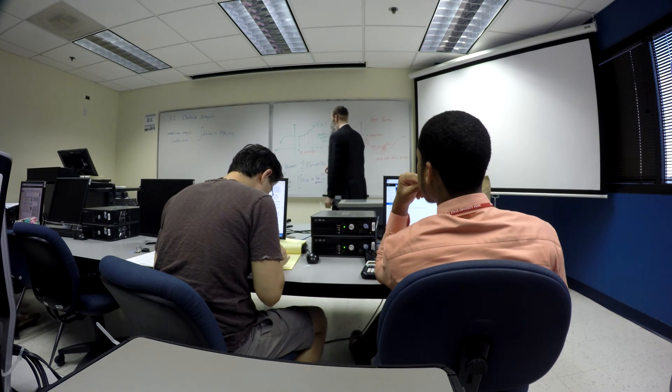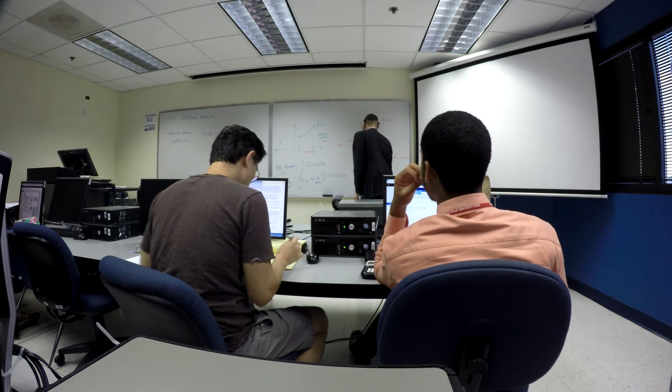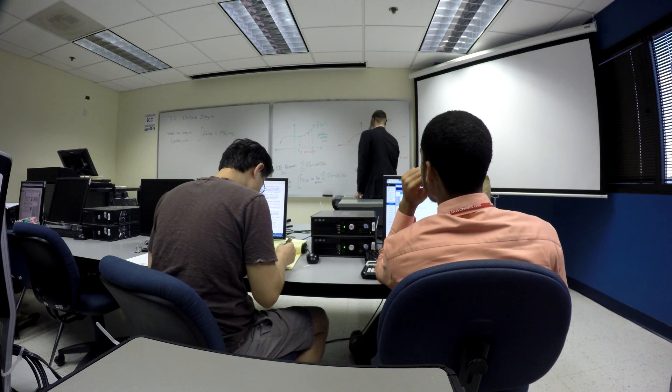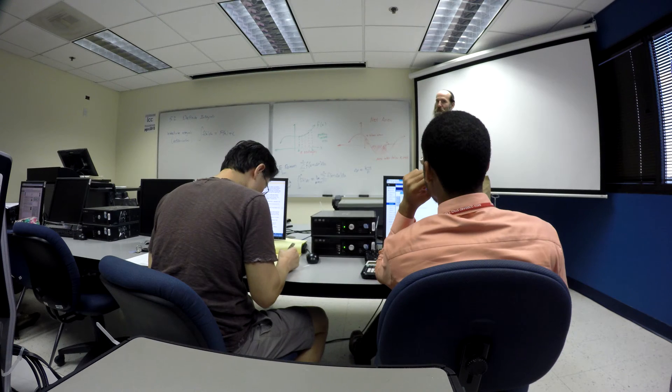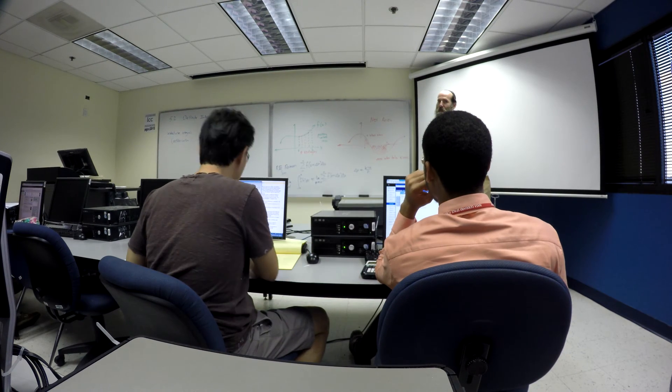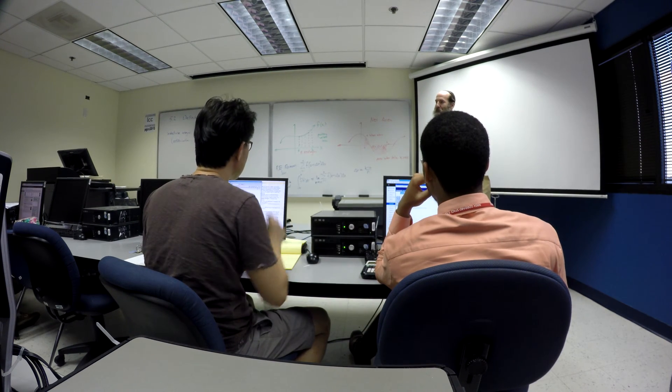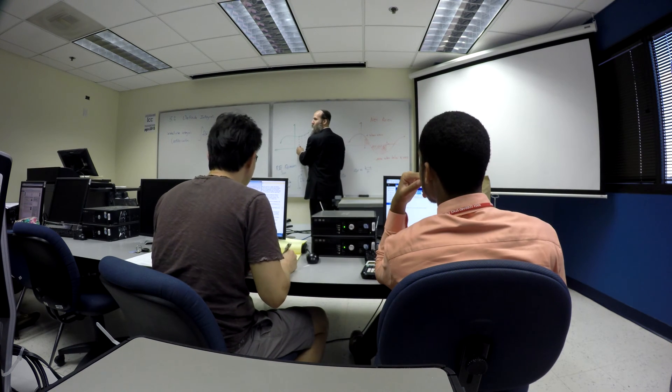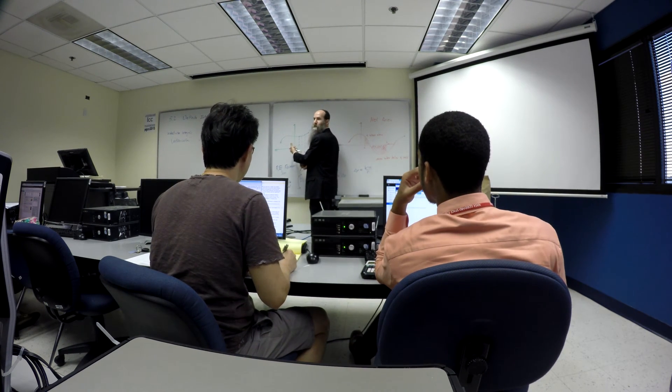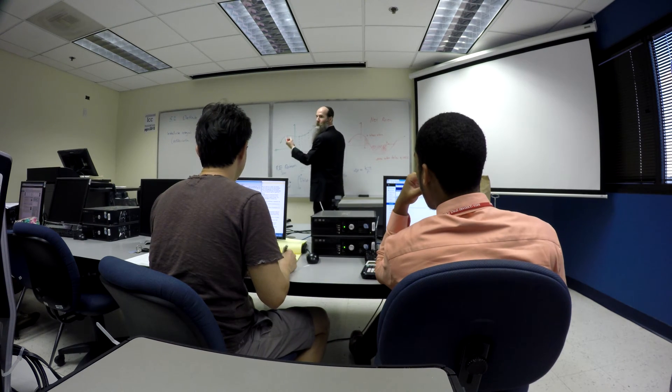The other thing you should note is that delta x, we said the formula was b minus a over n. So what is delta x approaching as n goes to infinity? A small number. Zero. It's approaching zero. That is, as you increase the number of rectangles, certainly the width of each rectangle must be decreasing towards zero. Otherwise, you can't fit in that many.